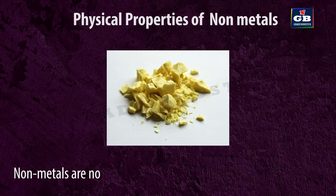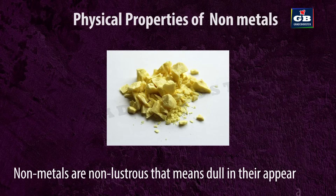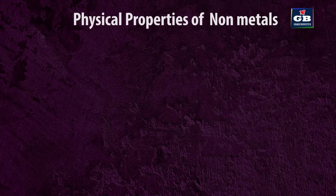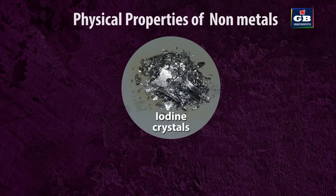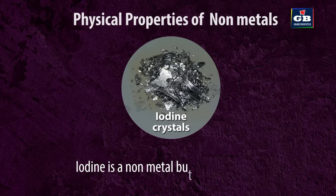Non-metals are non-lustrous, meaning they are dull in their appearance. However, iodine is an exception — iodine is a non-metal but it is lustrous.